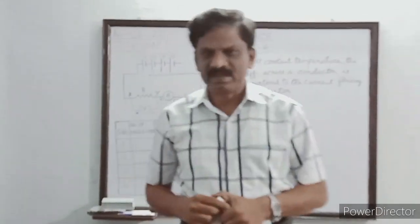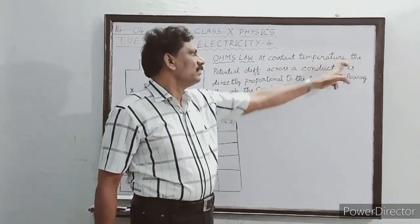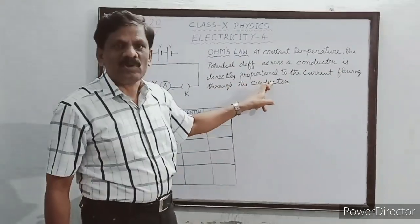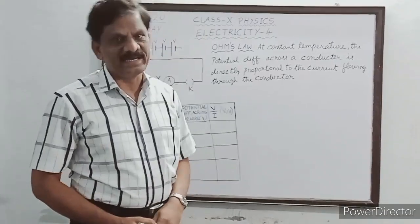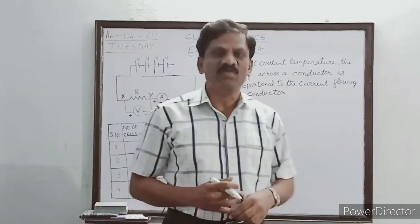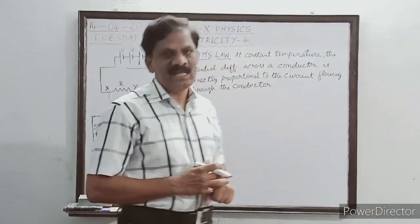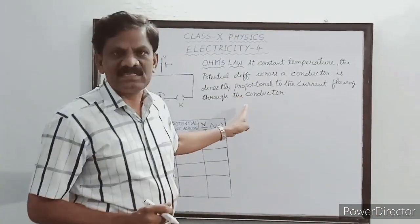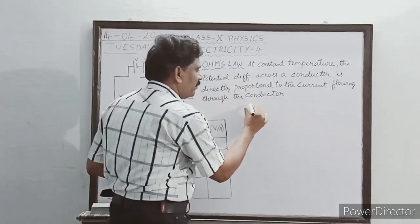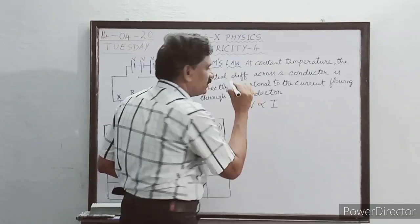What is the statement of Ohm's law? At constant temperature, the potential difference across a conductor is directly proportional to the current flowing through the conductor. The symbol for potential difference is capital V, and the symbol for electric current is capital I. So as per this statement, V is proportional to I.